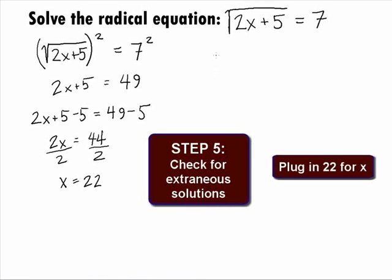Plugging 22 in for x into our equation, we get the square root of 2 times x, which will have 2 times 22 plus 5 equals 7. This will simplify to be square root of 49 equals 7, and the square root of 49 is 7, so we'll have 7 equals 7.